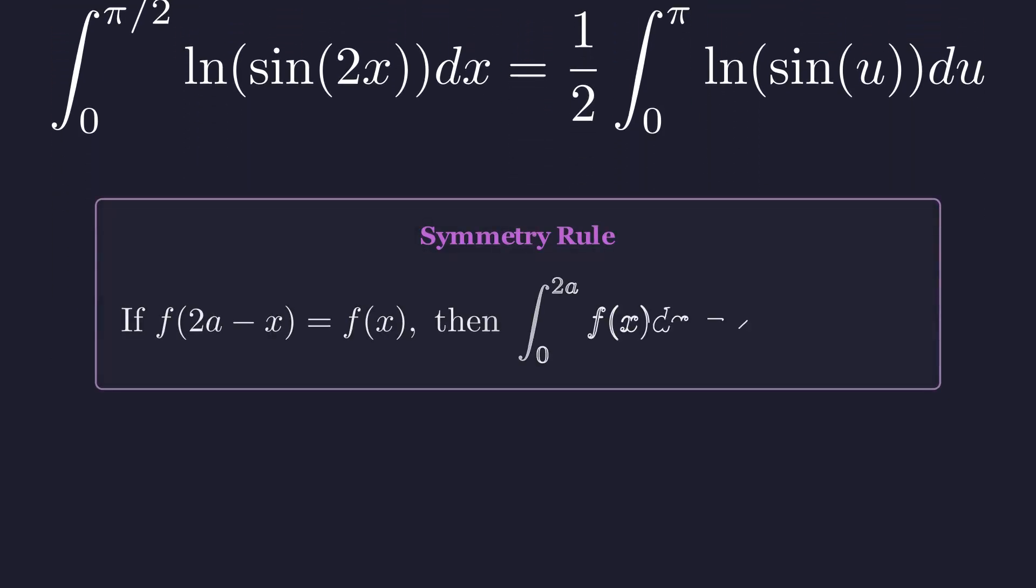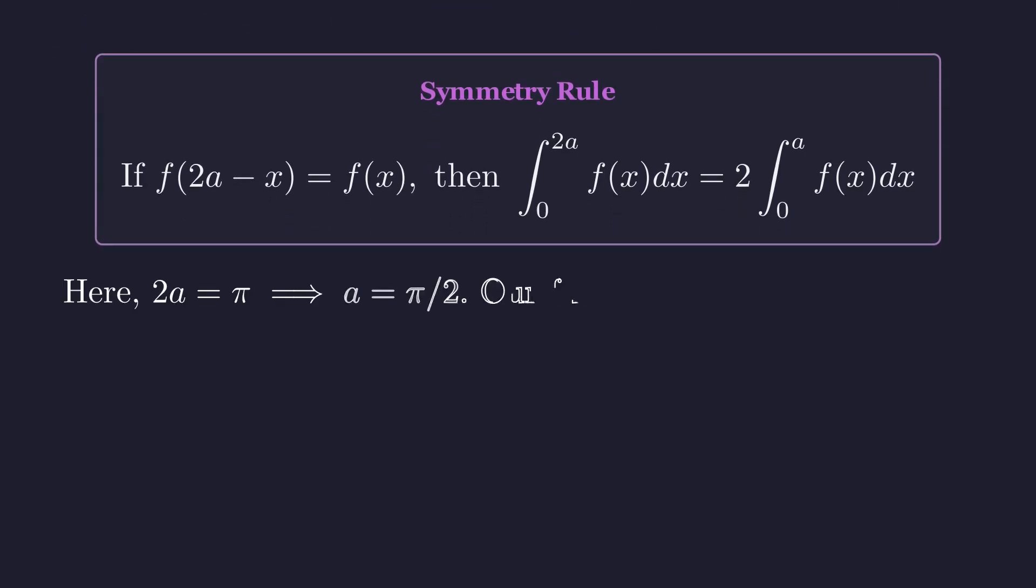To solve this, we use another property of definite integrals. If a function is symmetric around the midpoint a, then the integral from zero to 2a is just twice the integral from zero to a. In our case, the interval is from zero to pi, so 2a is pi and a is pi over 2.